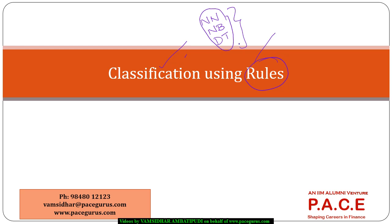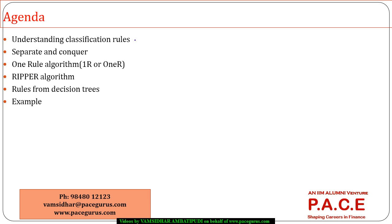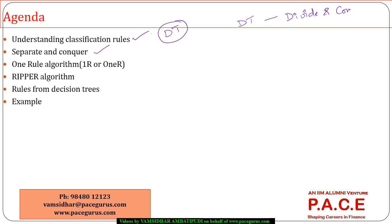We will be seeing how rules are different from the other approaches. You will always compare rules with decision trees — where they are good, where they are not good. Decision trees get into a strategy called divide and conquer, where they divide the data into subgroups.